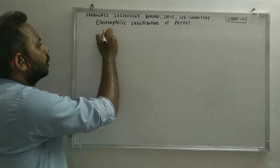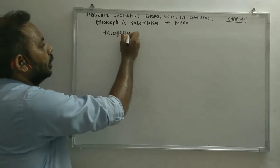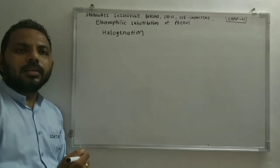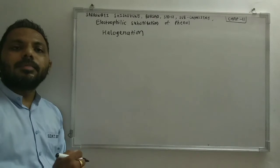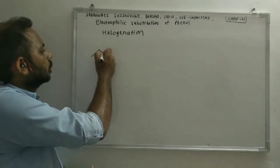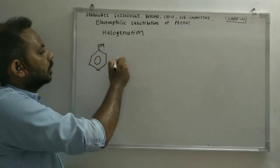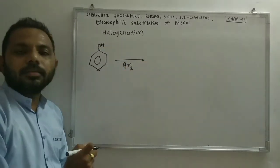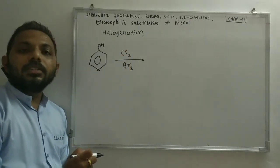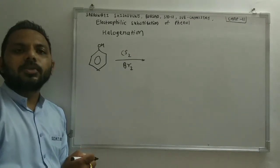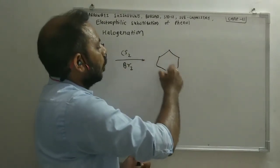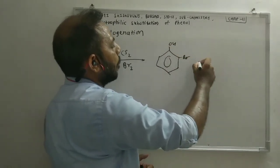Another electrophilic substitution reaction is halogenation — the addition of a halogen. Normally halogenation occurs in the presence of FeBr3 or FeCl3, which are Lewis acids. However, phenol reacts with bromine in the presence of carbon disulfide or chloroform, which are less polar solvents, and bromine can be added at the ortho and para positions.